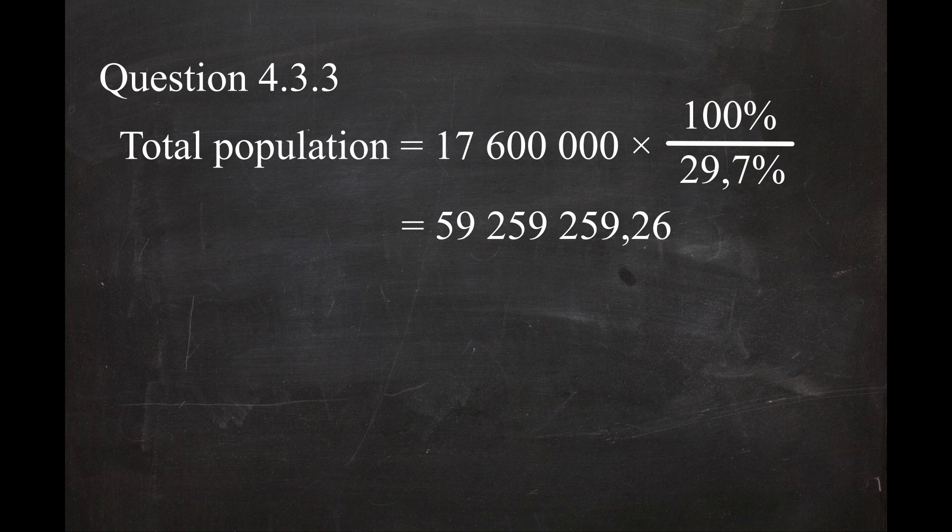This gives you a value of 59,259,259.26 people. Since you can't have 0.26 of a person, you have to round this number off to the nearest person, which gives you a total population of 59,259,259 people.